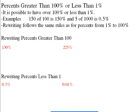Percents greater than 100% or less than 1%. It's possible to have over a hundred percent—hopefully some of you have seen that on a test when you got extra credit. It's also possible to get less than one percent. Examples: 150 out of 100 is 150%, or 5 out of 1,000 is 0.5%.